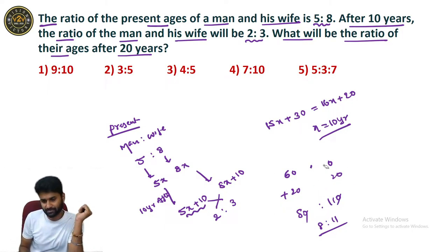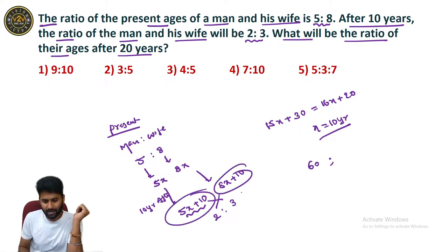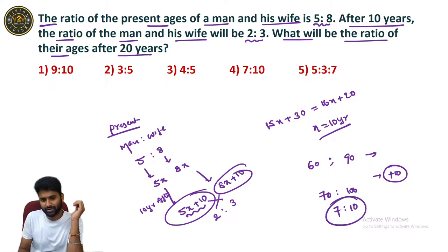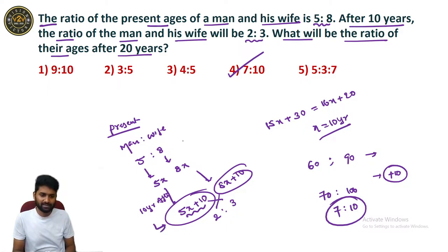After 10 years from present: man is 70, wife is 100. But after 20 years from present means just add 10 years to the 10-year values. So 70 and 100. The respective ratio is 70 to 100, which simplifies to 7 to 10.